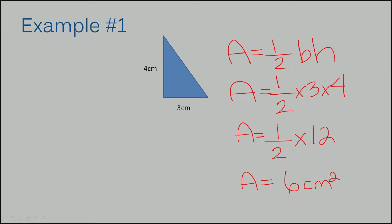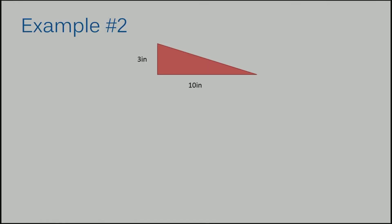Let's move on to example number two. We have a triangle that has a base of 10 this time and a height of three. I'm going to rewrite my formula again: area equals one half base times height. Area equals, my base is 10 and my height is three.